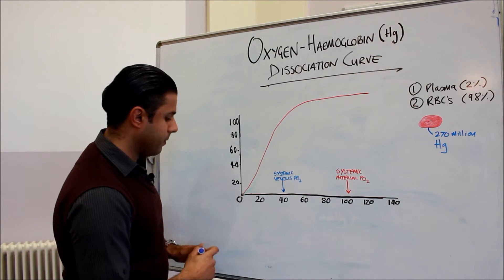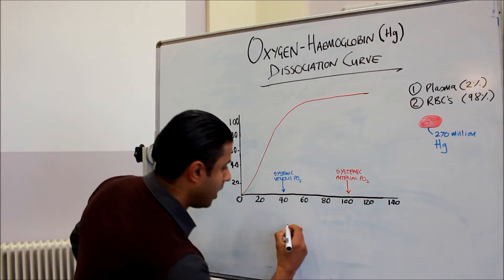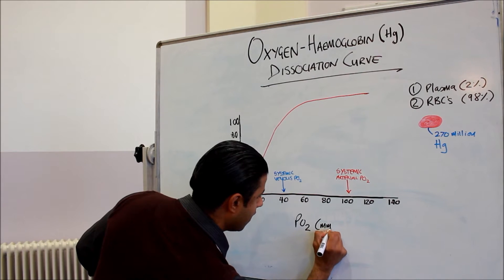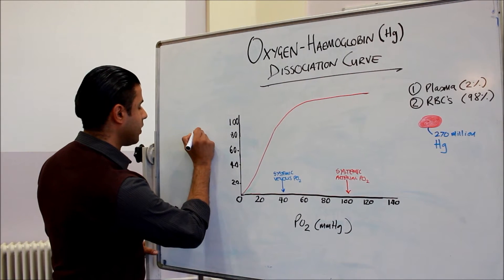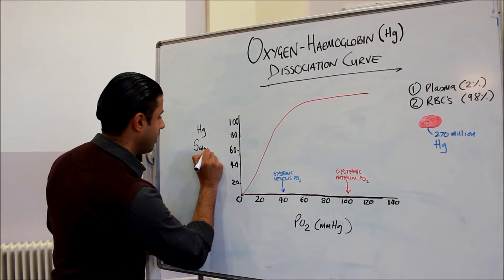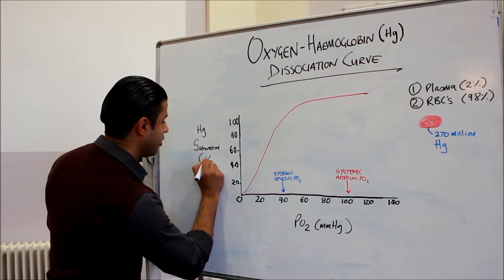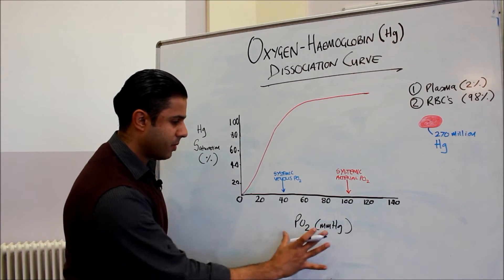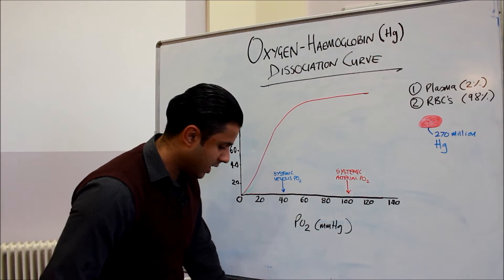So here we have the oxygen hemoglobin dissociation curve. We've got the partial pressure of oxygen at the bottom in millimeters of mercury, and here we have what's known as the hemoglobin saturation. So this is the percentage of hemoglobin which is saturated with oxygen—the hemoglobin saturation and the pressure of oxygen across the bottom.